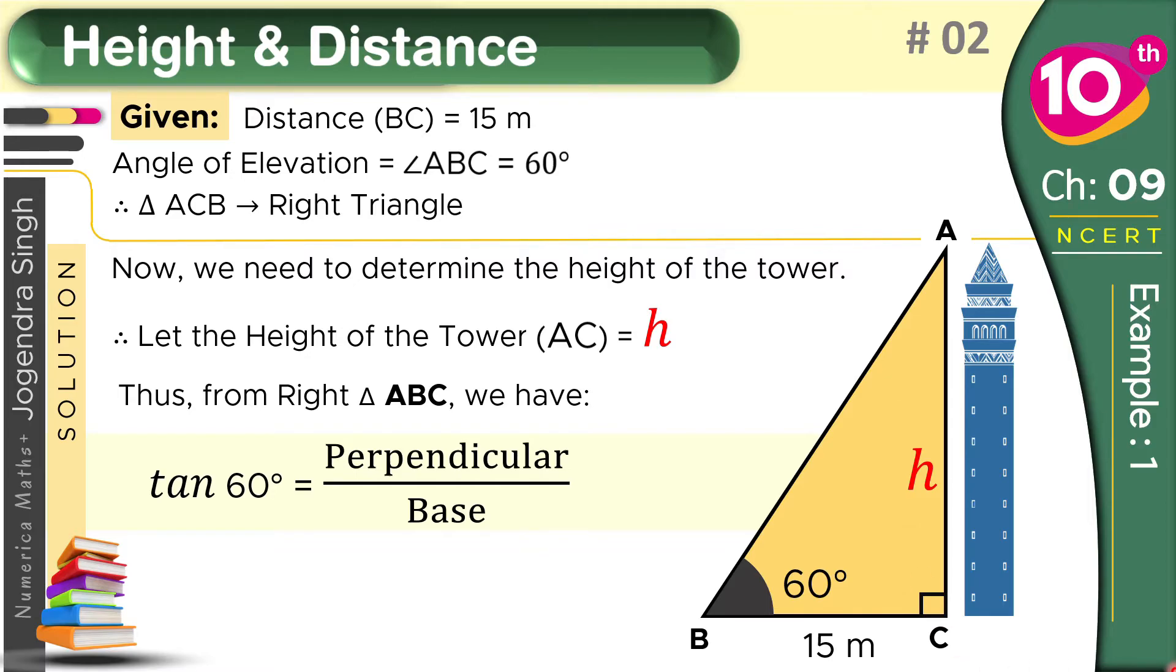So after replacing these, what will we write? AC upon BC. So here what do we need to see? These AC and BC, we have confirmed measurements, which are H and 15.